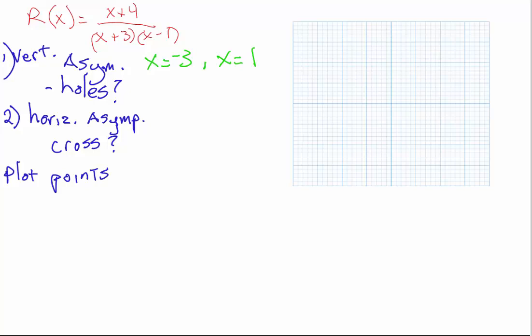Next, I want to find the horizontal asymptote — there can only be one. To do that, I look at the degree of the polynomial in the numerator, which is x to the 1, and the degree of the polynomial in the denominator, which is x squared. Since the degree of the numerator is smaller than the degree of the denominator, we have a horizontal asymptote at y equals 0.